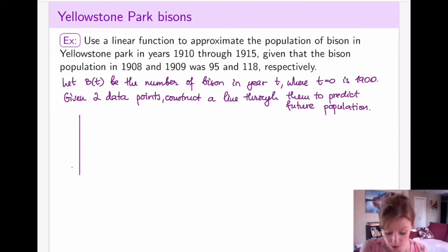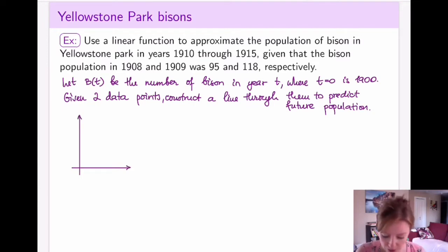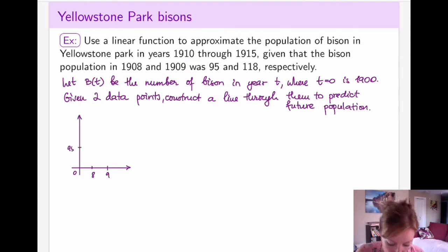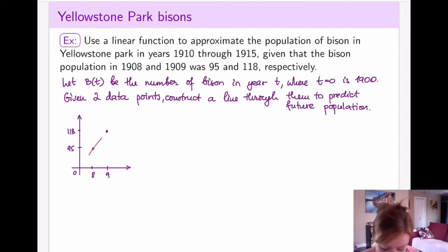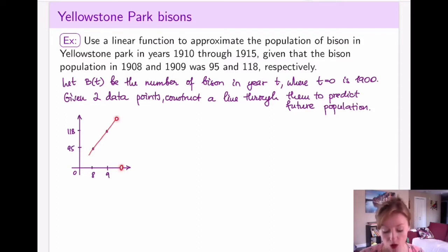If it is possible to draw a picture, I always strongly recommend drawing something because it will give you another way to visualize the information. The countdown starts at zero, so I know the population in years 1908 and 1909, which are 95 and 118. I have these two exact points and I'm going to construct a line through them to calculate how many bison there are in 1910, 1911, and so on.